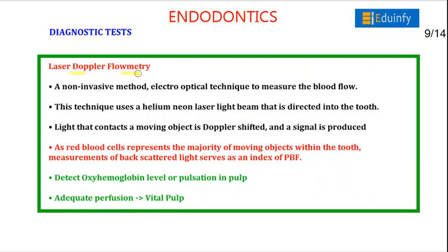Laser Doppler flowmetry is a non-invasive electro-optical technique that measures blood flow. A helium-neon laser light beam is directed into the tooth; light contacting moving objects is Doppler shifted and a signal is produced. As red blood cells represent the majority of moving objects within the tooth, measurement of backscattered light serves as an index for peripheral blood flow. Laser Doppler flowmetry detects oxyhemoglobin level or pulsation in the pulp; adequate perfusion indicates a vital pulp.